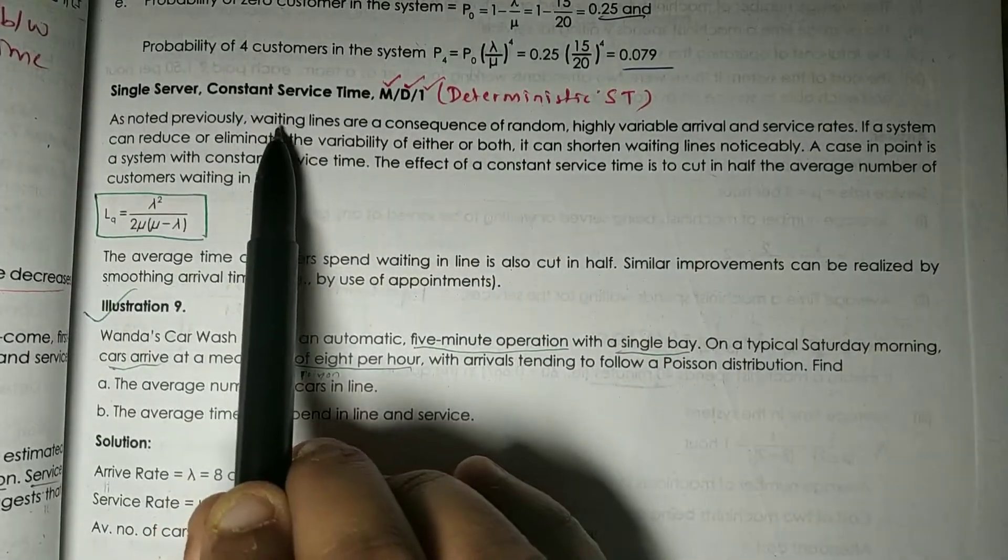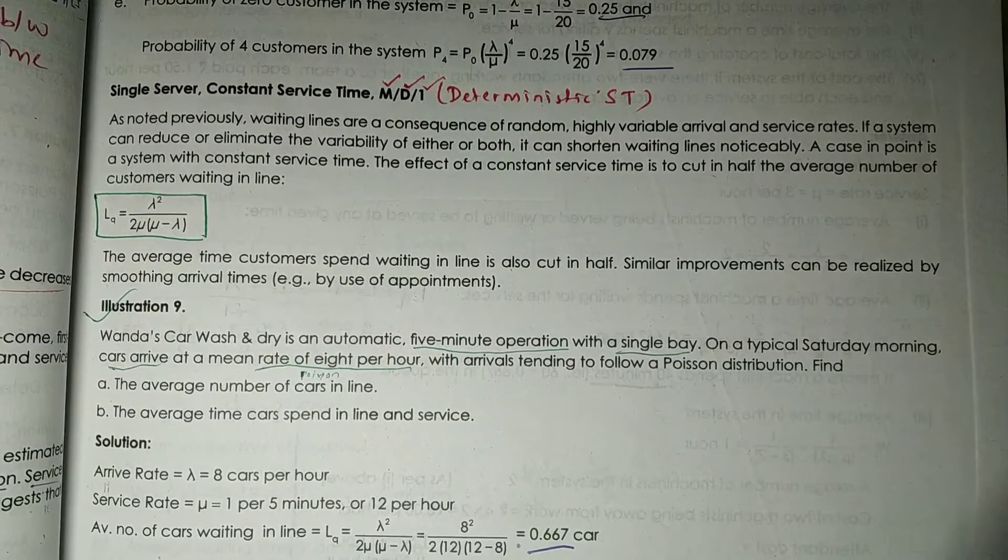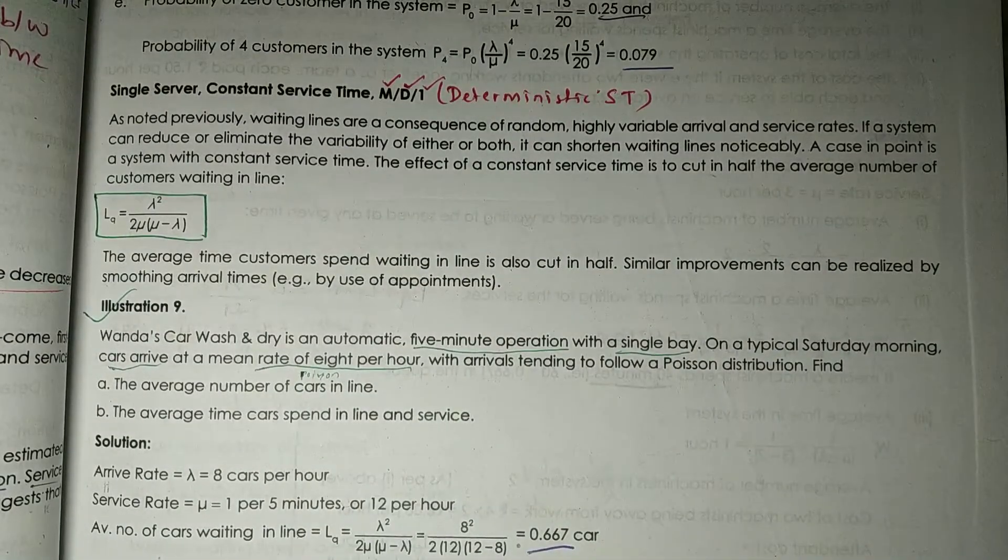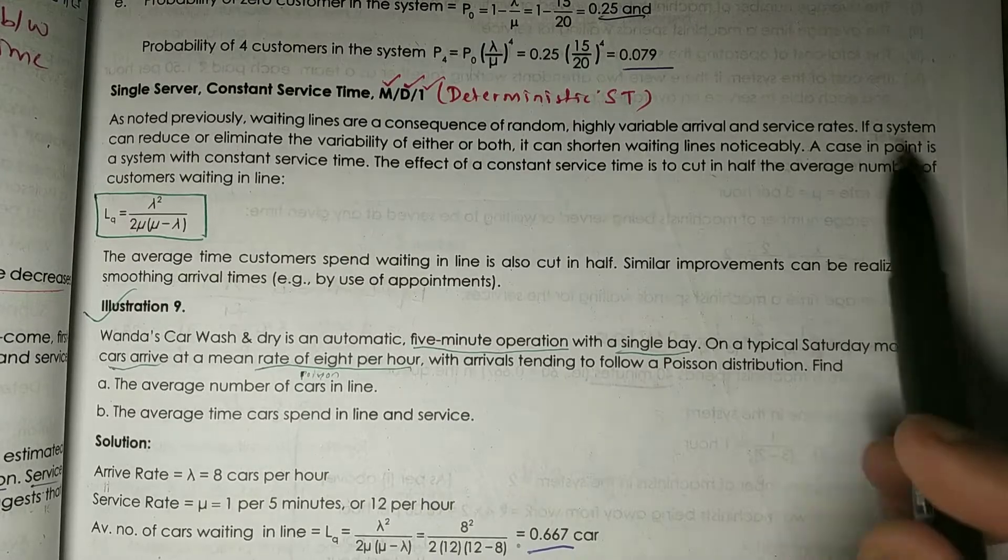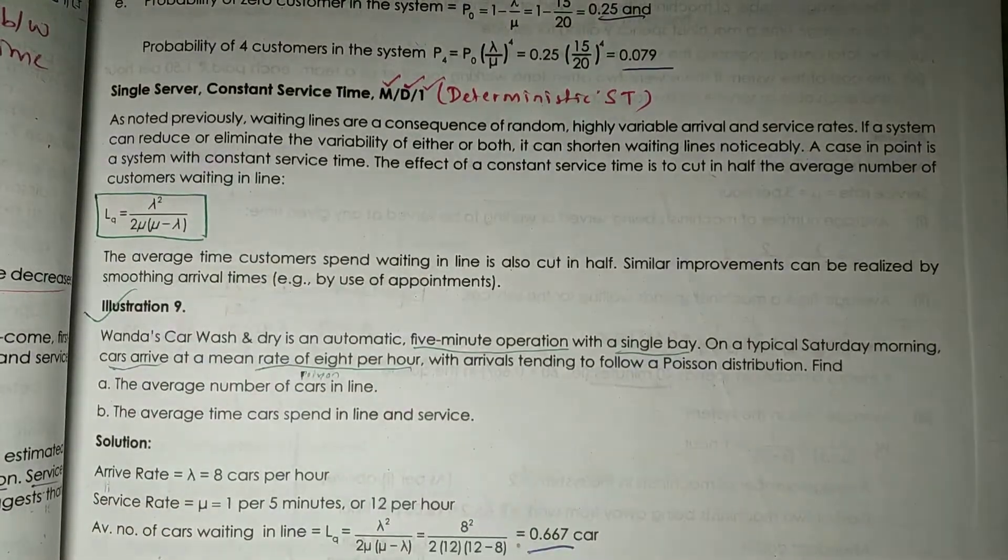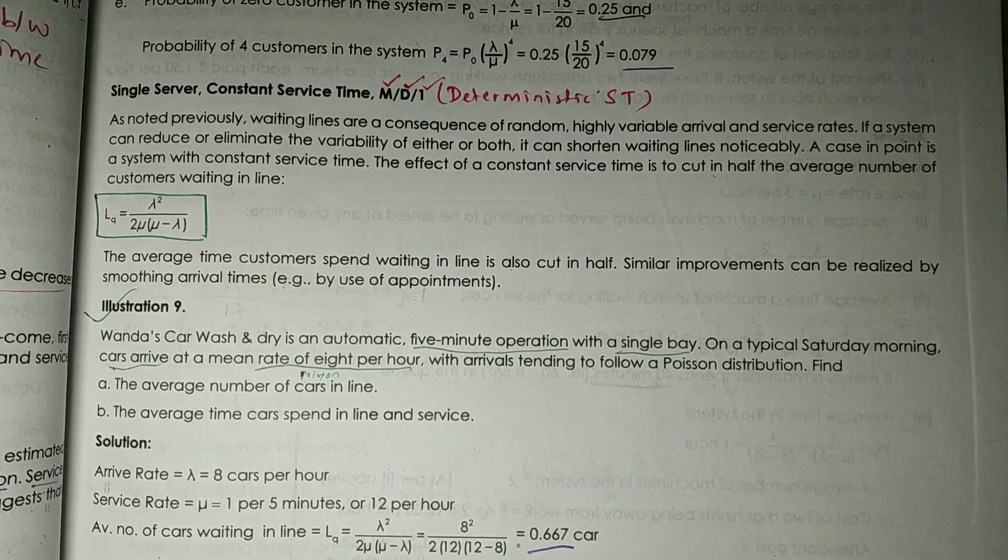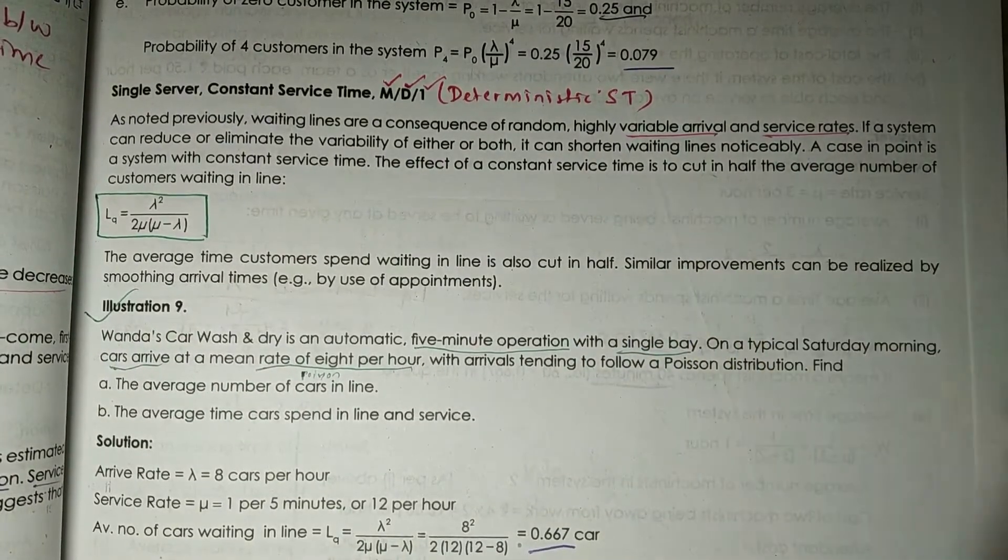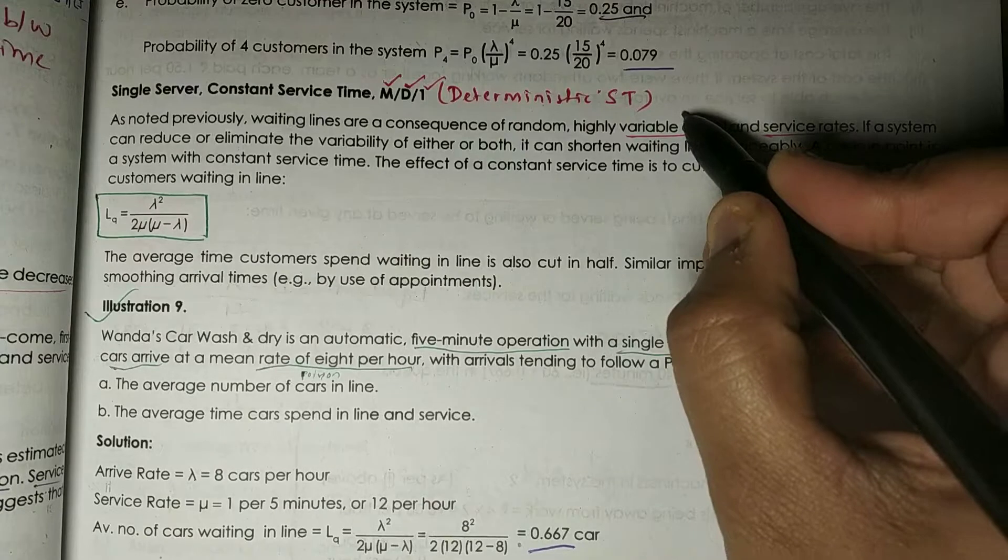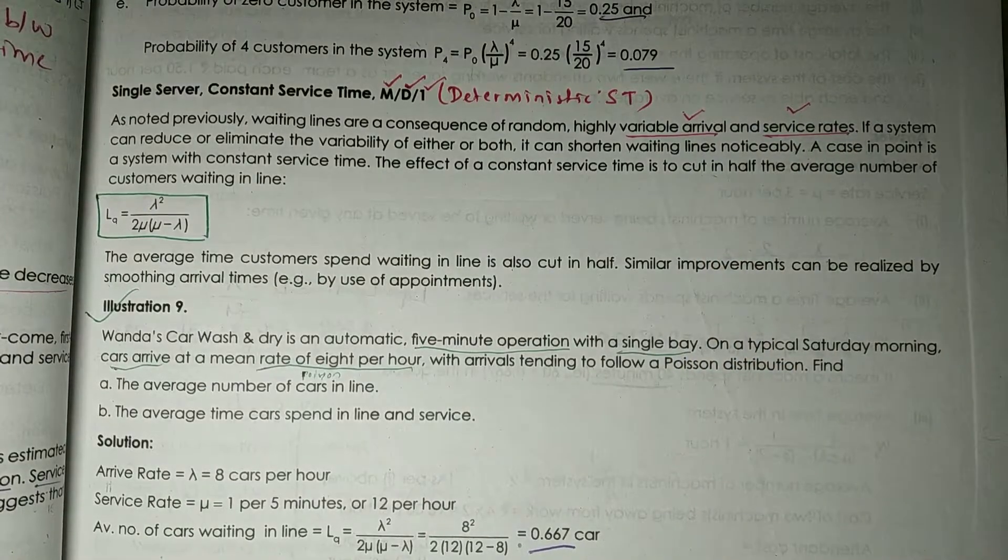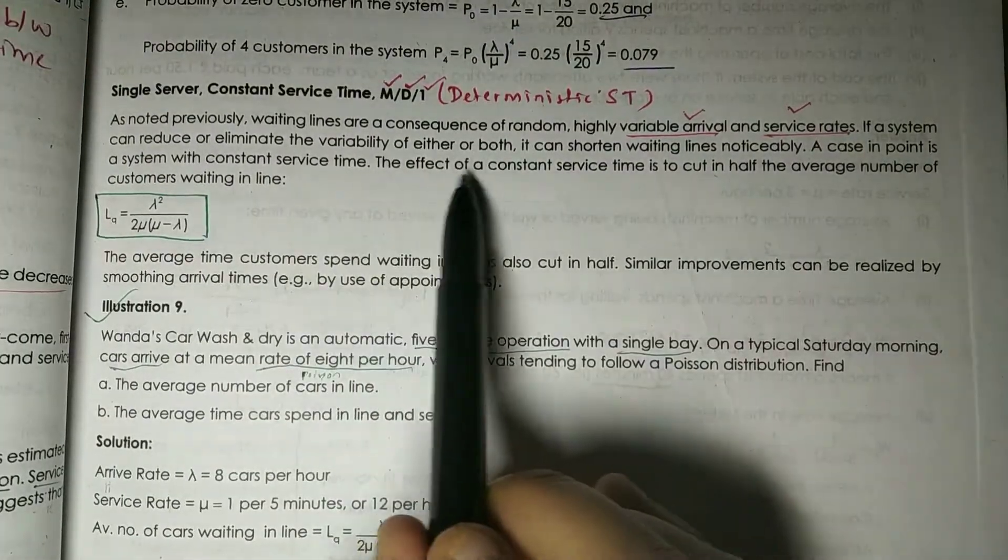As we know already, waiting lines are a consequence of random, highly variable arrival and service rates. If a system can reduce or eliminate the variability of either one of these or both, then it can obviously reduce the waiting line. If waiting is increasing a lot, then we can reduce the variable factor of these two factors.